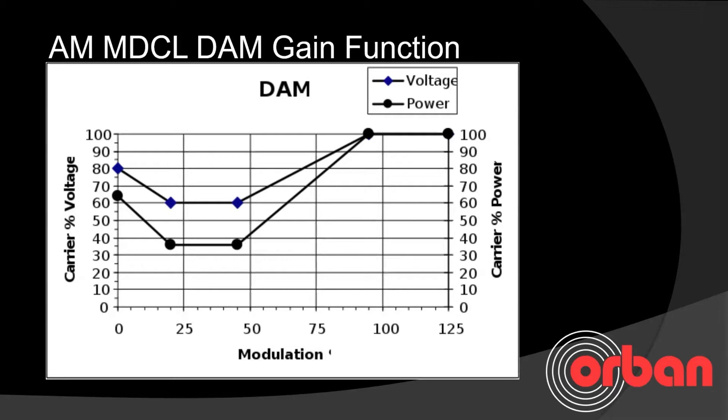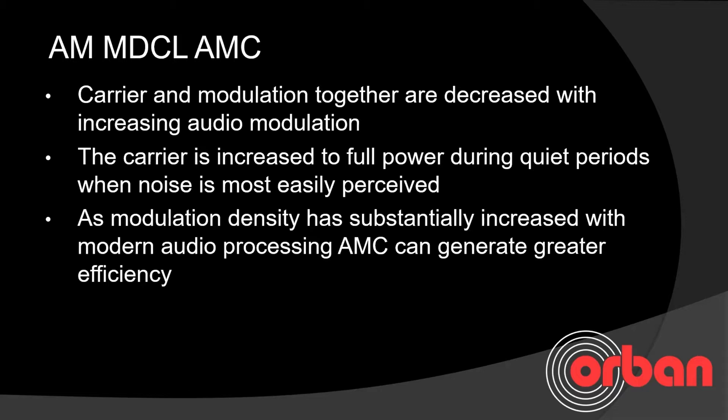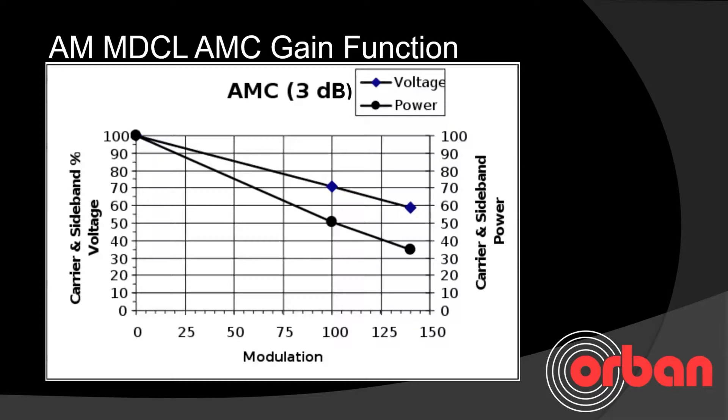The other way to do MDCL is called AMC, where the carrier and modulation together are decreased with increasing audio modulation. The carrier is increased to full power during quiet periods when noise is most easily perceived. As modulation density has substantially increased over the last 20 years with modern audio processing, AMC can generate greater efficiency because the higher modulation densities allow the carrier to be suppressed more. Here's a gain function chart with AMC at 3 dB of carrier suppression — you can see that as modulation increases, the amount of carrier and sideband power is greatly reduced.